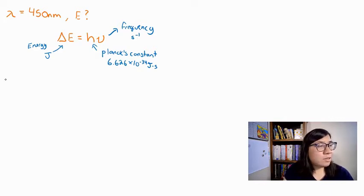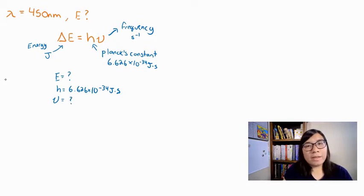So let's try to solve this problem. I know that I am looking for E, so I'm going to put a question mark. I know Planck's constant, so I'm going to write that down. And I don't know nu, so I'm going to put another question mark. And this is a problem because you can't have two unknowns. You can't solve this equation if you have two unknowns.